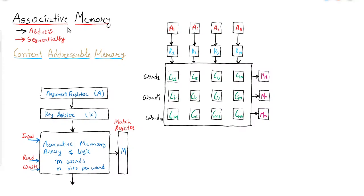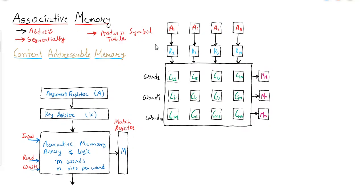What is associative memory? Instead of using an address, if data can be searched using the content of memory, then this kind of memory is known as associative memory, where data is searched based on the value or binary pattern. Normally this kind of memory is used by a compiler in an address symbol table, where the symbol table gives the name of a variable and it is replaced by the address of that variable.